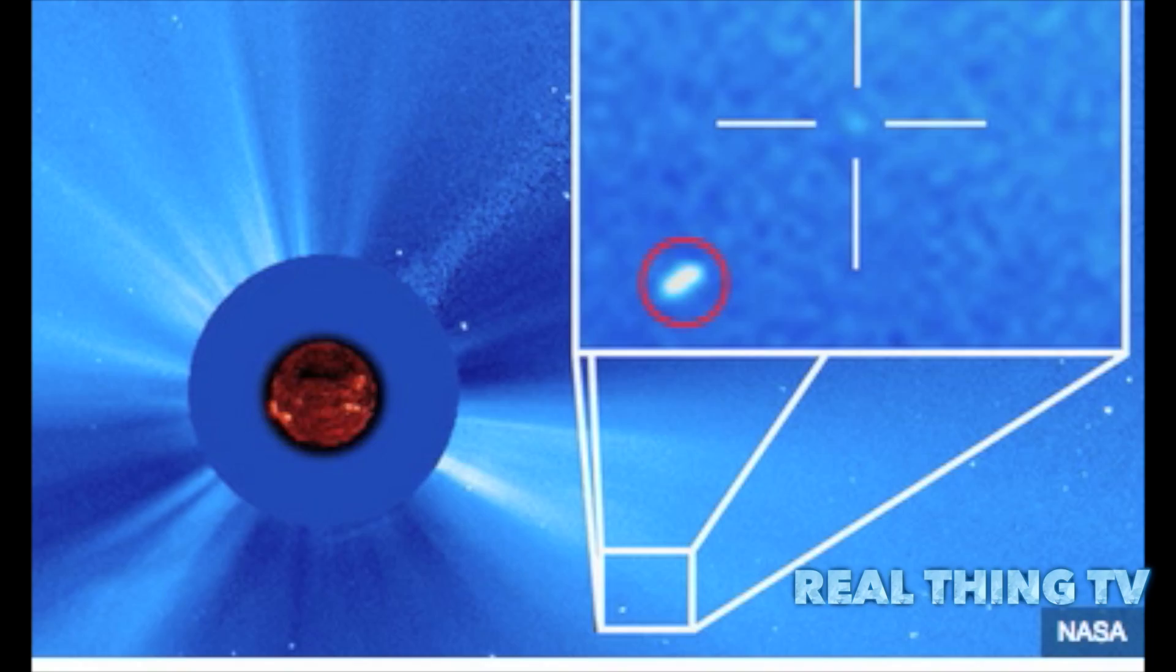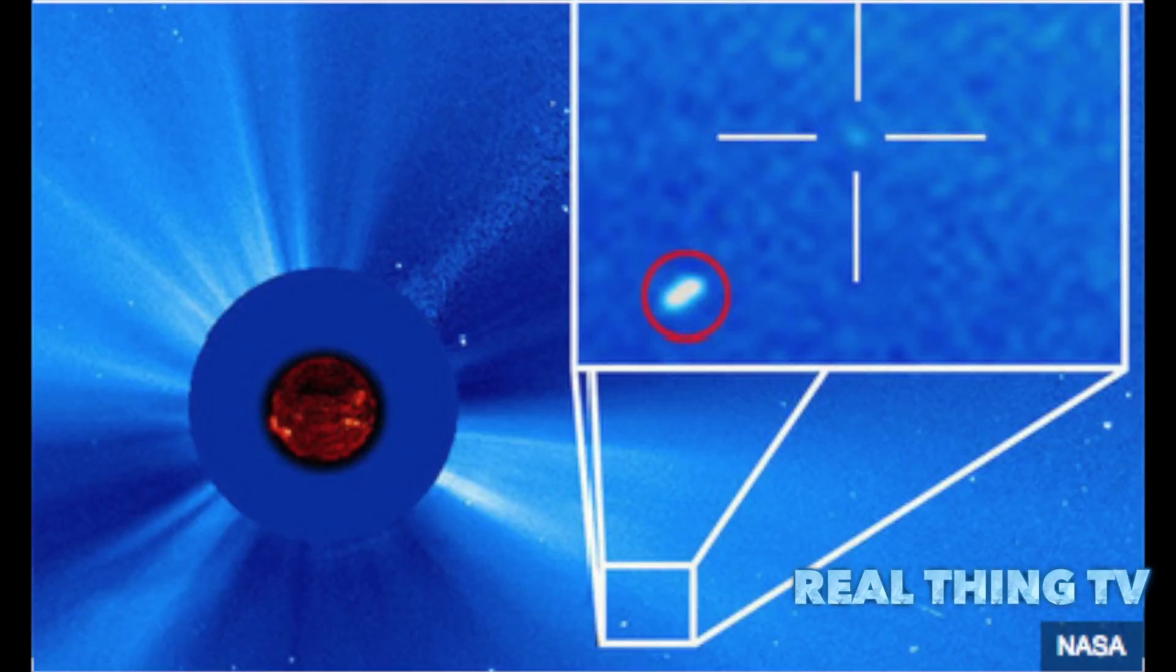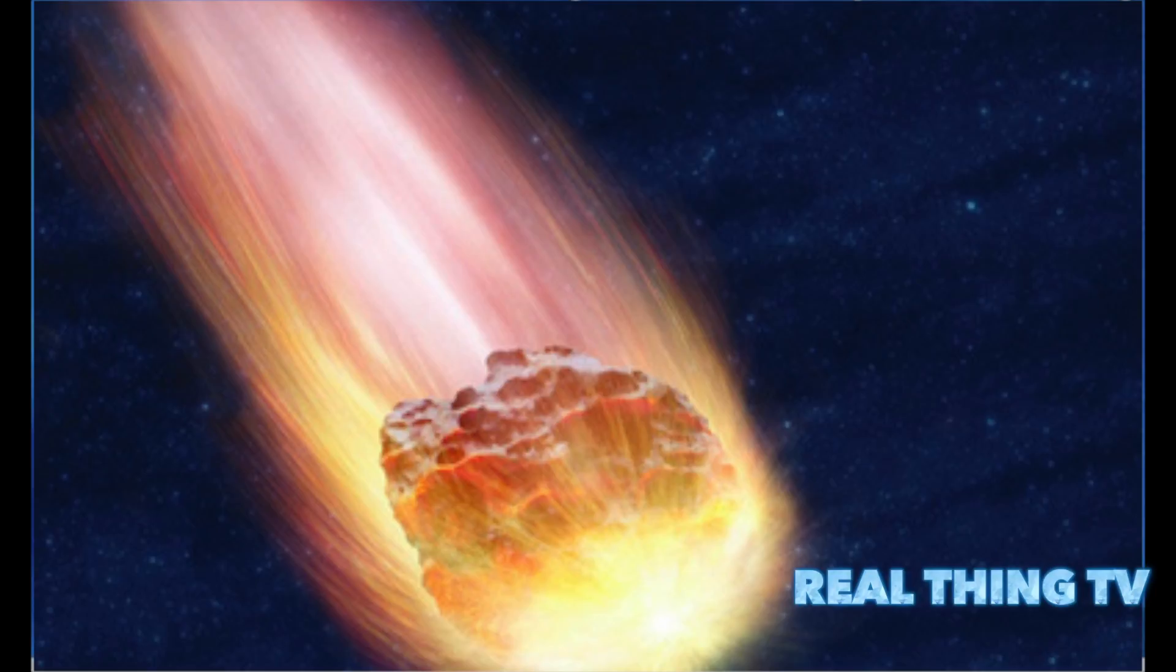SOHO, a specialist telescope on board an unmanned space probe since it began photographing the Sun 20 years ago. The dot, circled, is a comet thrusting towards the Sun which was captured by SOHO on September 14.